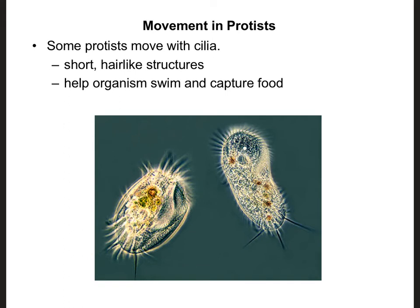Let's talk about movement in protists. These little guys are generally found in some kind of water environment, whether in an aquatic ecosystem or inside a person or another animal. Some protists will move using cilia — short, hair-like structures you can see as little offshoots. They can help them swim around, and some even use cilia to sweep food into their mouth opening. We can actually classify protists according to how they move — there's a whole category called ciliates because they move by means of cilia.